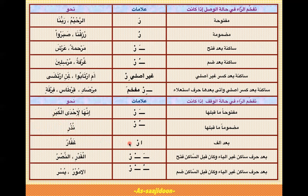وقفاً تیسری condition: Ra ساکن ہو اور اس سے پہلے الف آئی ہو تو Ra موٹا پڑھا جائے گا۔ مثلاً 'غَفَار' میں Ra کو سکون دے دیا کیونکہ stop کرنا ہے، اس سے پہلے الف آرہی ہے — lips spread نہیں کریں، منہ کے اندر سے موٹی آواز نکالیں: 'غَفَار'۔